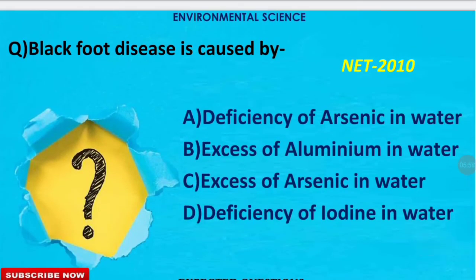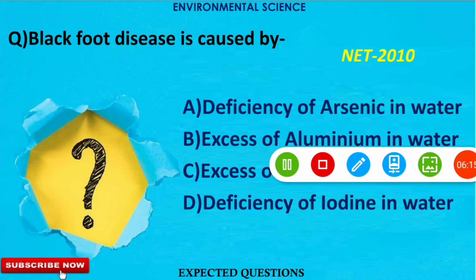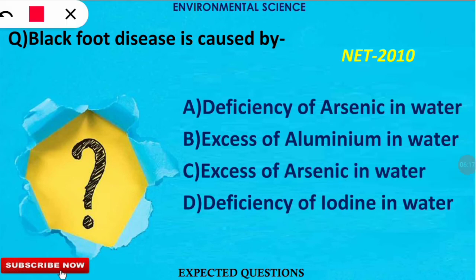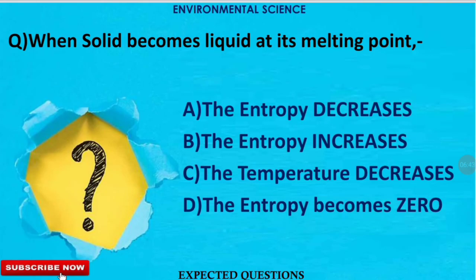The next question is related to water pollution: black foot disease is caused by which of the following? This question has appeared several times in the NET examination. The correct option is option C. When the content of arsenic in water is higher than its usual desired amount, it causes black foot disease.